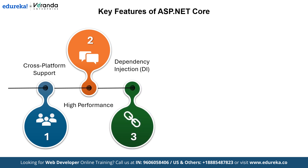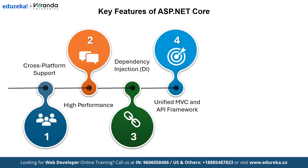ASP.NET Core has built-in support for dependency injection, which makes it easier to manage and maintain your code. DI promotes cleaner, modular and testable code by reducing dependencies in your applications. Next is the unified MVC and API framework — ASP.NET Core combines MVC and Web API frameworks into a single model, simplifying development so you no longer need separate frameworks for handling user interfaces and APIs.